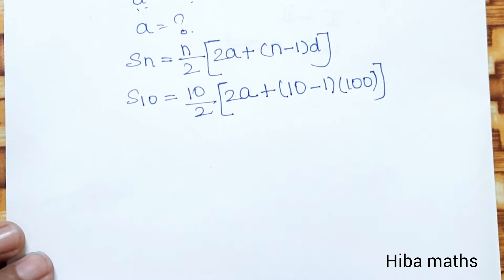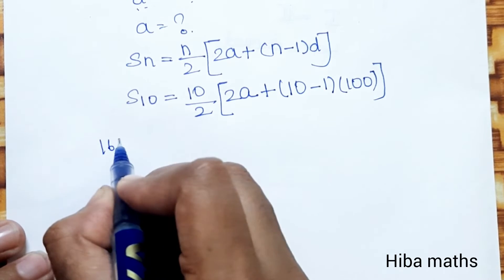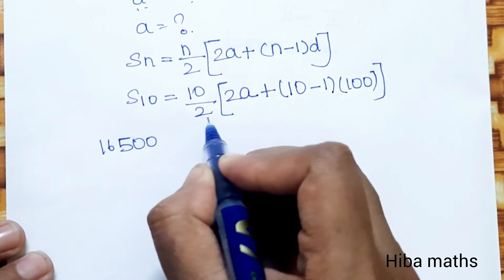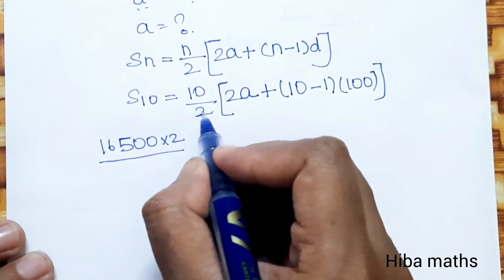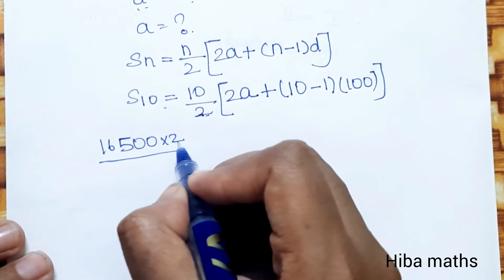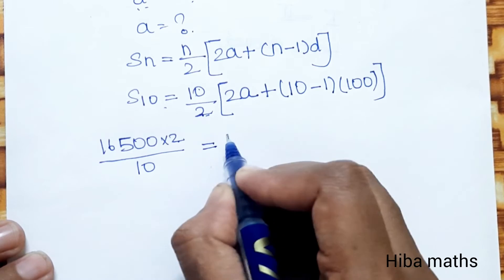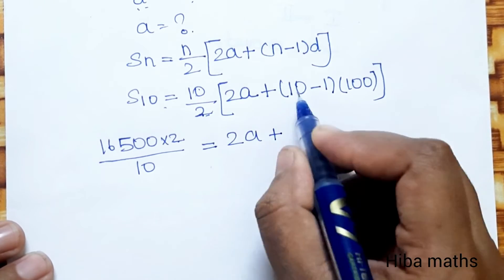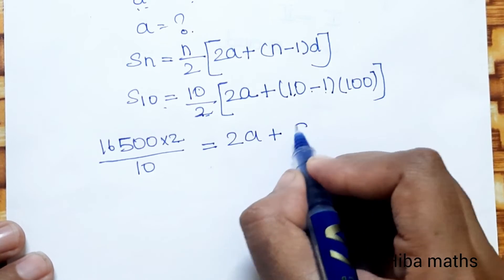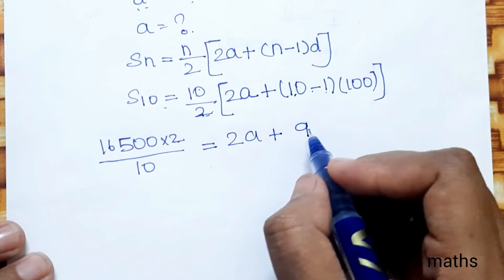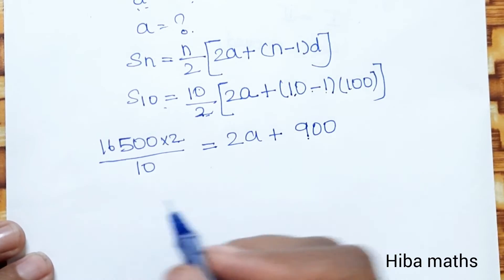Now substituting: 16,500 equals 10 divided by 2, multiplied by 2A plus 10 minus 1 into 100. That gives us 16,500 equals 5 into 2A plus 9 into 100, which is 2A plus 900.